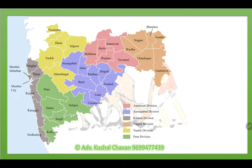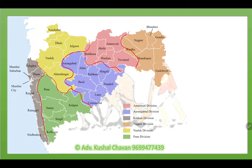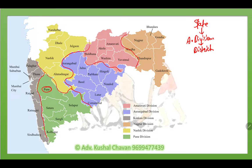As you can see here, this is the map of Maharashtra State. For the purpose of convenience of revenue administration, the whole Maharashtra State is divided into a number of divisions — there are six divisions in total. Each division is again divided into a number of districts. For example, Pune division is divided into the districts of Pune, Satara, Sangli, Solapur and Kolhapur.